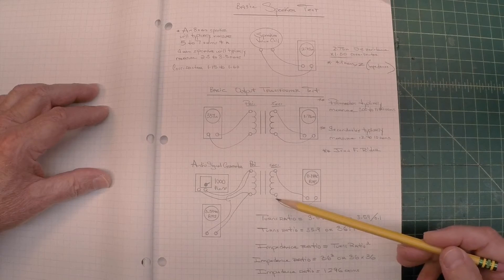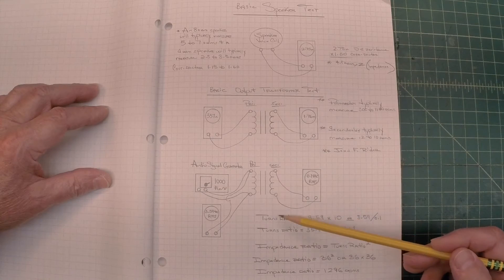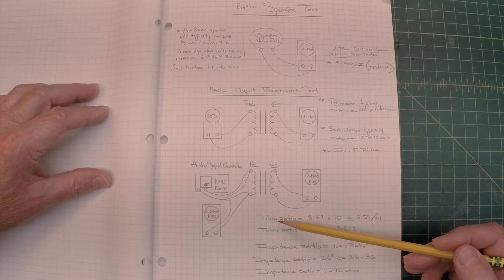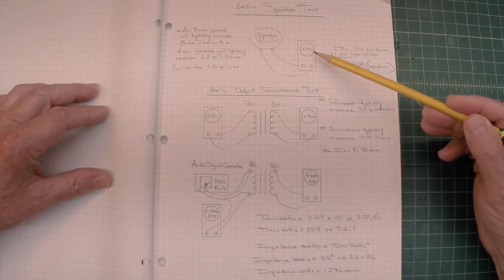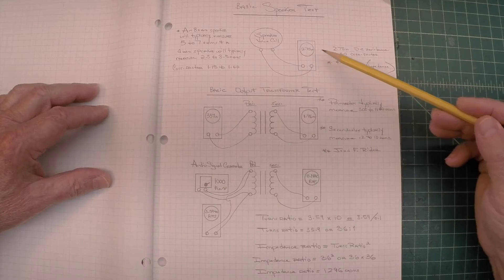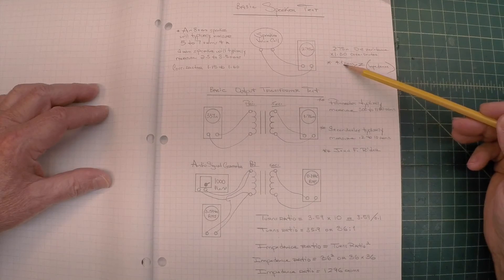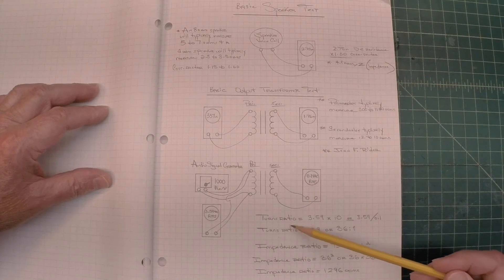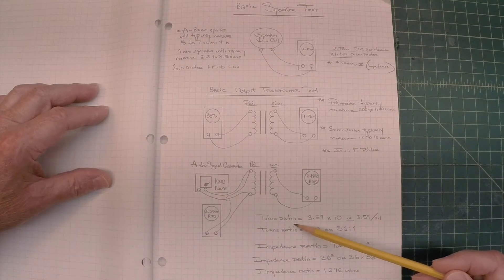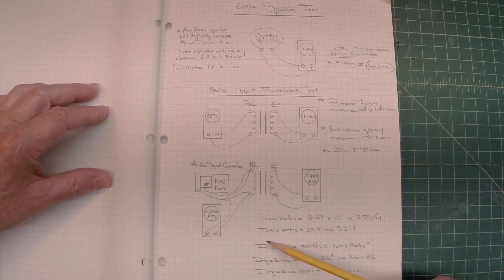Now another test that I wanted to make to understand the output transformer, and make sure that between the output transformer and the impedance of the speaker being calculated around 4 ohms, that we have a good turns ratio match. And to do so, you can see my setup.